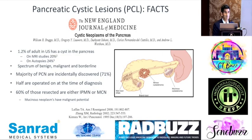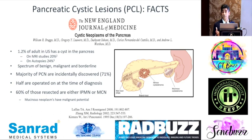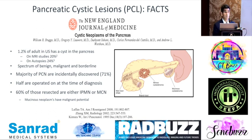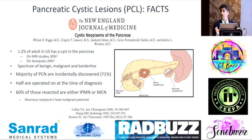Cystic lesions are a bigger challenge because of their incidence. On autopsy studies, 25% of adult pancreases have some cyst, and on MRI, about 20-25% of pancreases imaged for other indications will have some cyst. The good news is the majority of them are benign lesions.